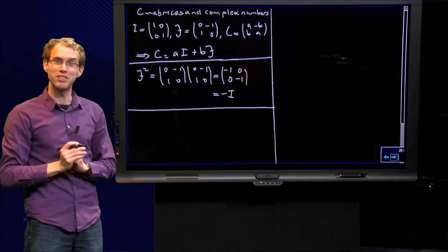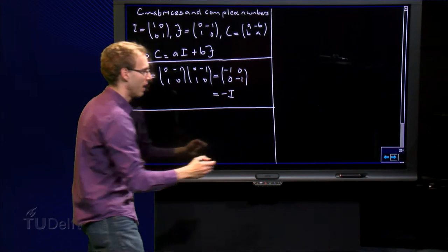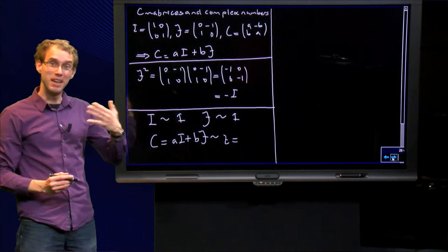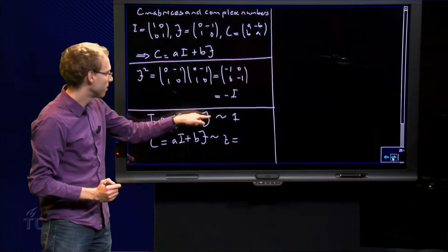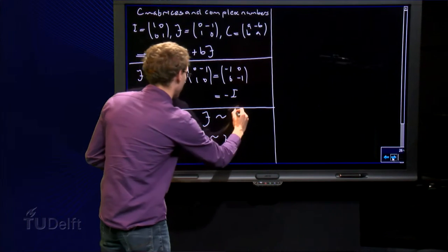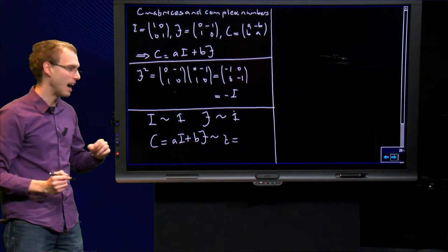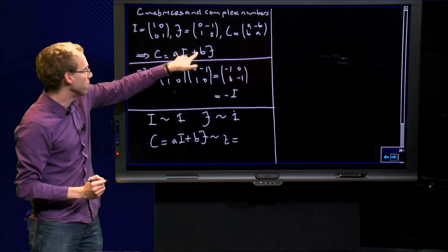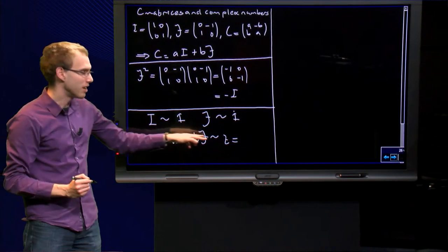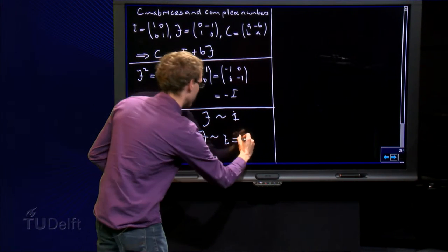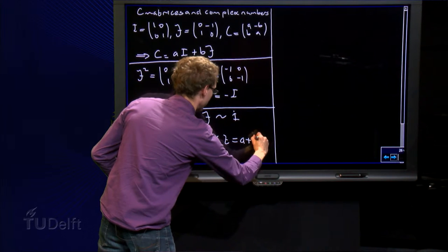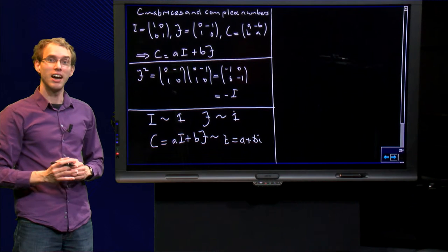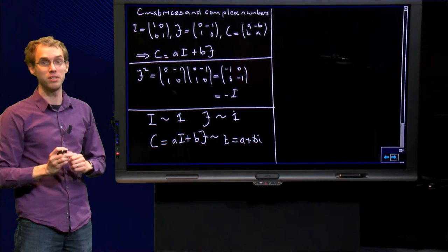I hope this reminds you of complex numbers. So what do we have? I basically behaves like the number 1, J basically behaves like the number i, complex number i. A C matrix equals A times I plus B times J behaves like a complex number z equals A plus B times i. So C matrices are really similar to complex numbers z.